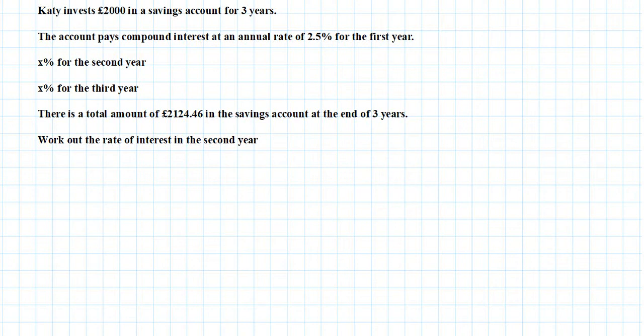Then x% for the second year and x% again for the third year. There is a total amount of £2124.46 in the savings account at the end of the three years.